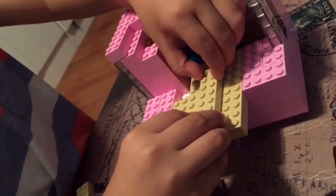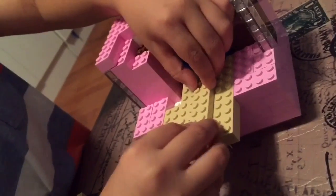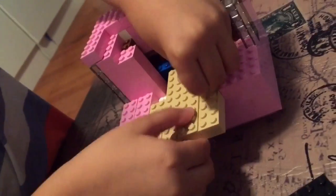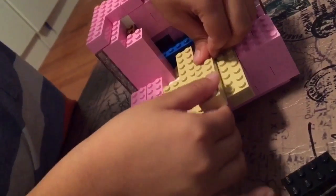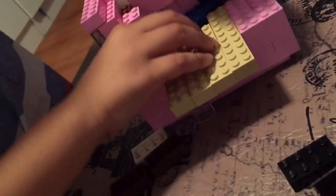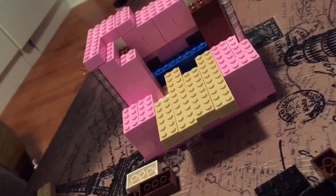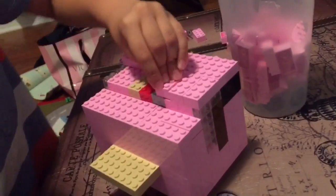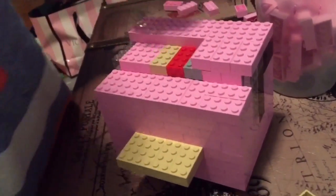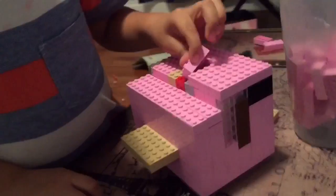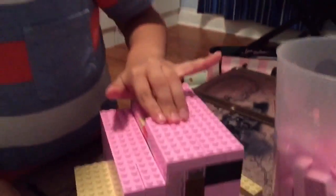Since I had a limited amount of pink Legos, I was trying to use pink blocks for the outside only. This is why you can see blue and beige and all kinds of other colors on the inside.